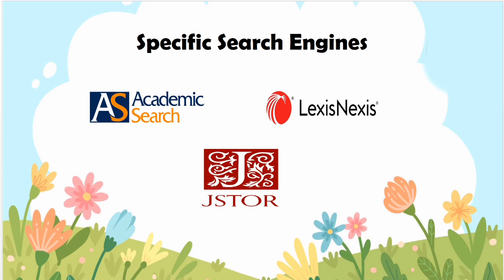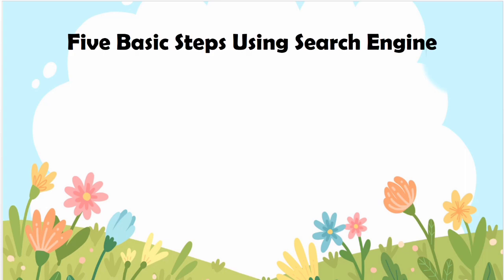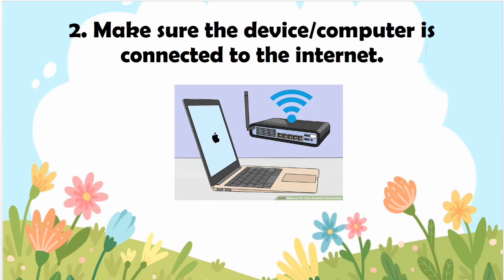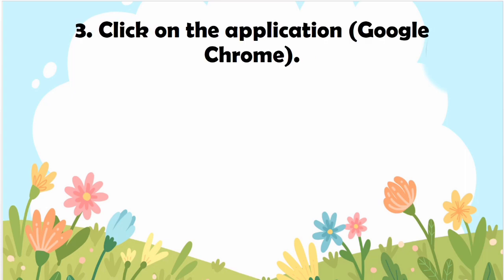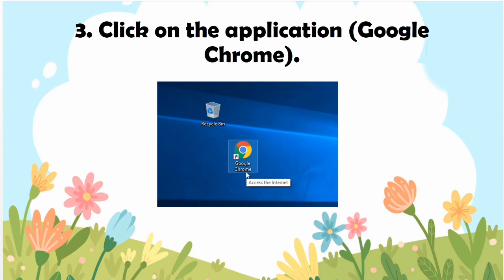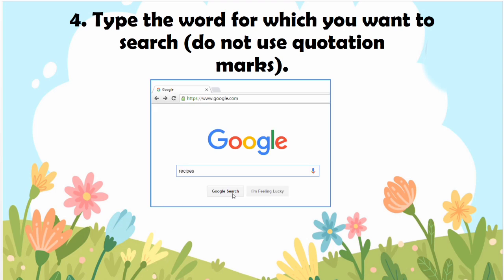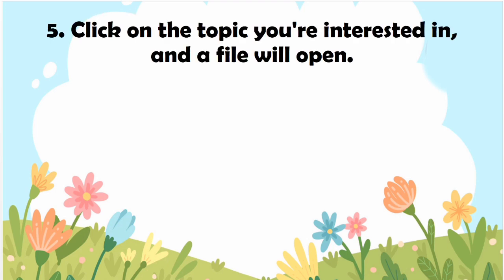Which of the given search engines have you tried to use? Now that you know what search engines are, here are the steps in using search engines. First, turn on the computer. Second, make sure the device or computer is connected to the internet. Third, click on the application Google Chrome. Fourth, type the word for which you want to search — make sure you do not use quotation marks. And the last step, click on the topic you're interested in and the page will open.